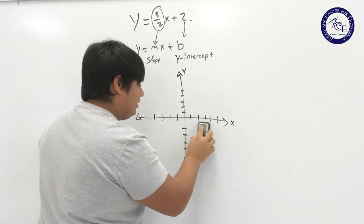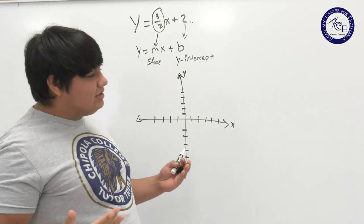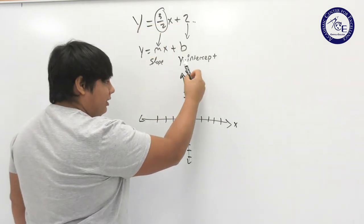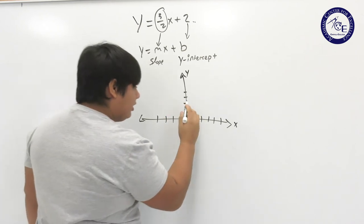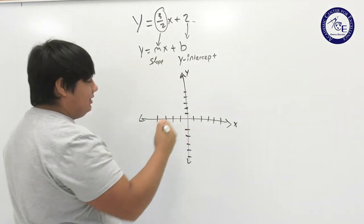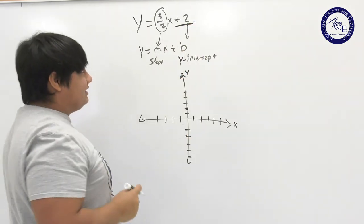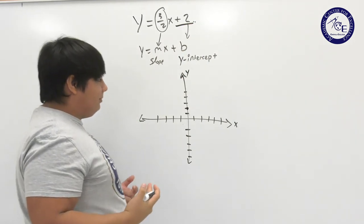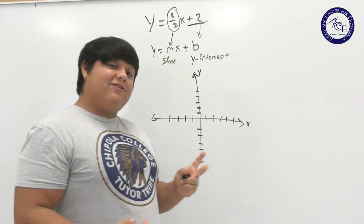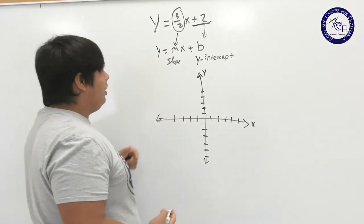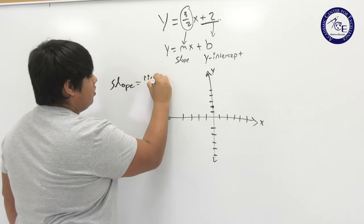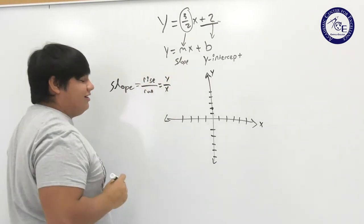The first thing I always start with is the y-intercept - it's the easiest to figure out because it tells us exactly where we need to be. This 2 tells us that we're going to find 2 on the y-axis and that's going to be our first point. To plot a line you need 2 points. The first point we've already been given - that was the y-intercept. We need to find the second point through the slope, which is rise over run, or y over x.